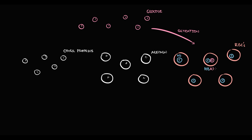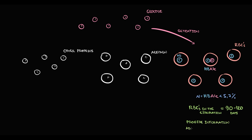Some glucose molecules without any enzymes irreversibly bind to hemoglobin, and such hemoglobin with bound glucose we call glycated hemoglobin. The normal level of glycated hemoglobin is less than 5.7%. Because red blood cells live in the circulation for 90 to 120 days, glycated hemoglobin provides information about the average blood glucose level for the past 8 to 12 weeks.